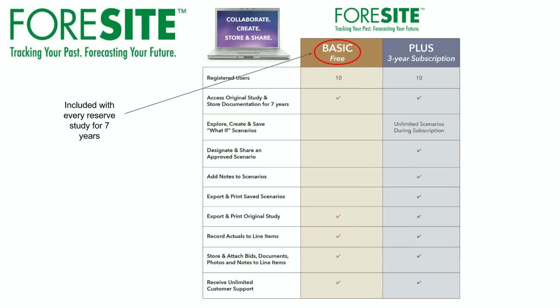Then we have Foresight Plus, and there are two main benefits. There's the modeling piece, which will allow you and your 10 registered users to create models and better plan for the future, making informed decisions. And then there's the approved model portion — once an association has created a model that they want to move forward with, they can make that their designated and approved model moving forward.